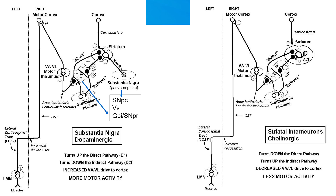The other neuromodulatory system is the cholinergic system. These are the cholinergic interneurons within the striatum, and they also synapse on the direct and indirect pathways. The cholinergic system has the direct opposite effects of the dopamine system: acetylcholine directly inhibits the direct pathway and excites the indirect pathway, so the end result is a decrease in motor activity.